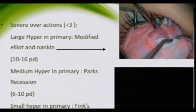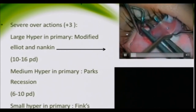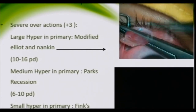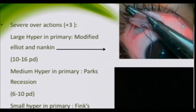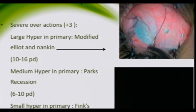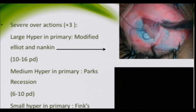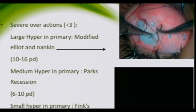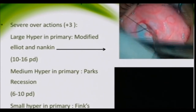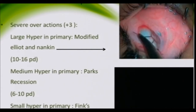The next surgery is a modified Iliakis-Nankin, done when there is severe overaction and a large hyper deviation in primary position. This gives recession as well as an anteriorization effect. You separate the muscle, tie the sutures, hook the inferior rectus, and pass the suture close to the inferior rectus. The second suture is in the line of the inferior rectus, so the new insertion is parallel to the edge of the inferior rectus, along its temporal border.